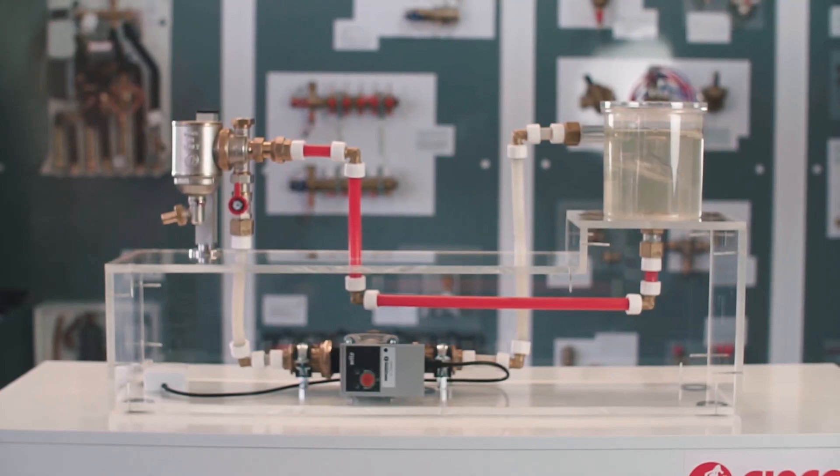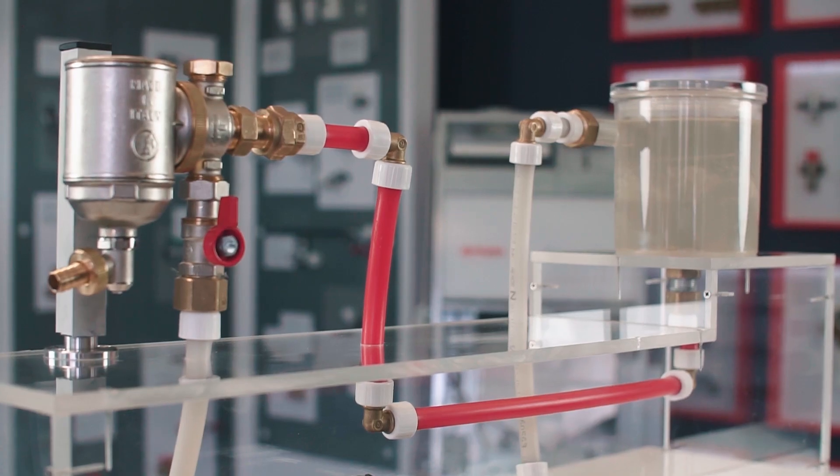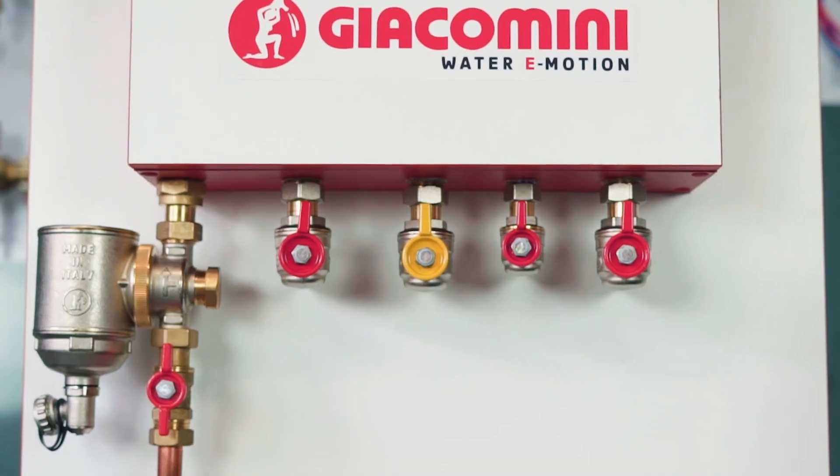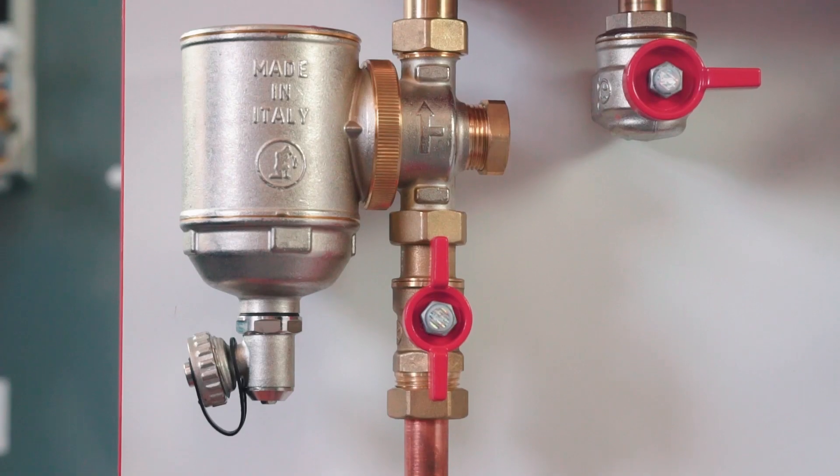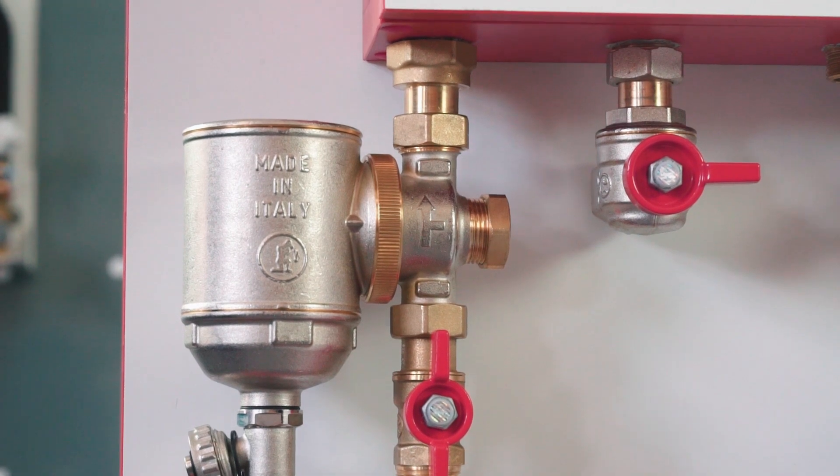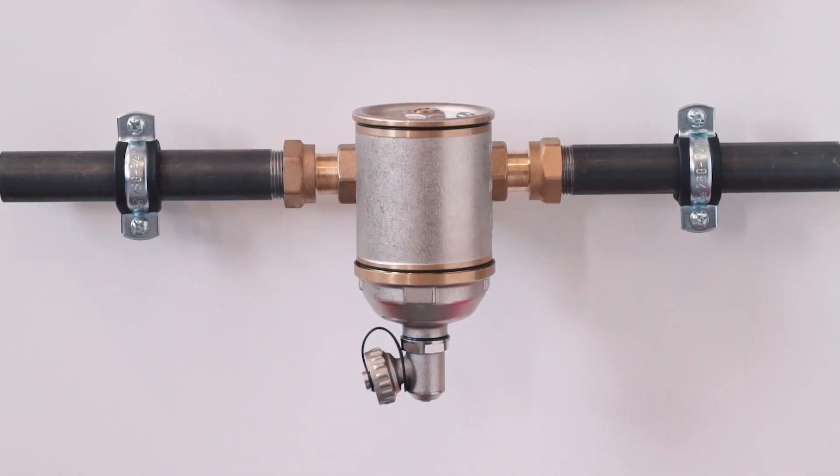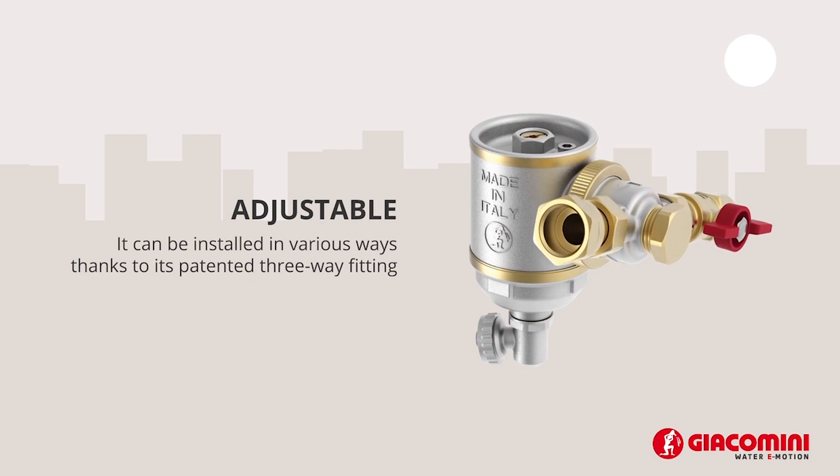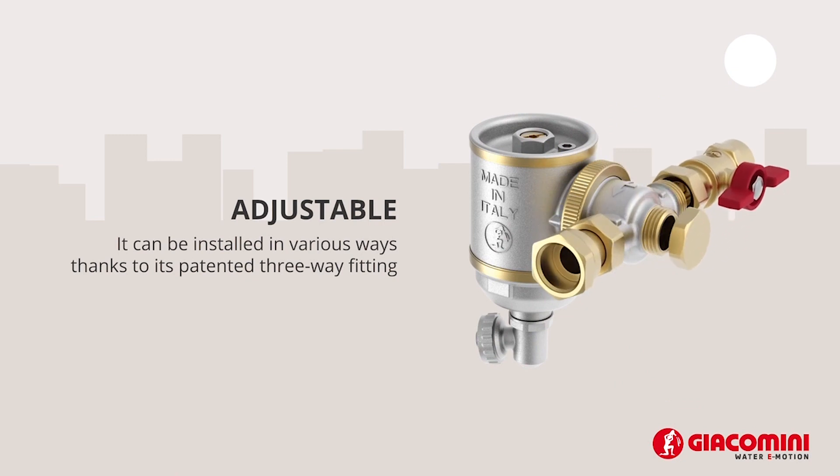The 3/4 inch magnetic dirt separator is a perfect solution adapted to boilers, especially if it is necessary to replace an old boiler with a new condensing boiler where space is limited. Due to the adjustable connecting joints, the connection between the boiler and the system is much easier.